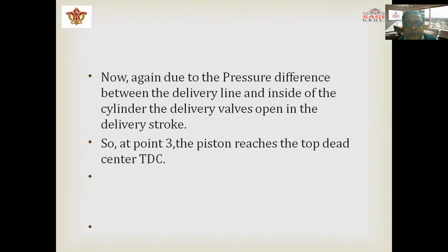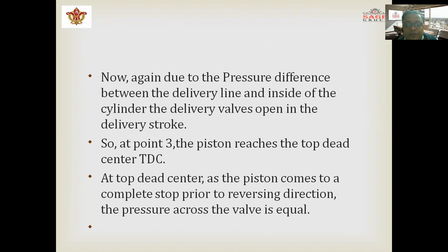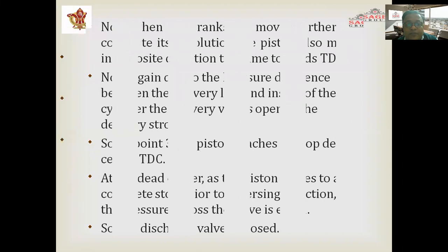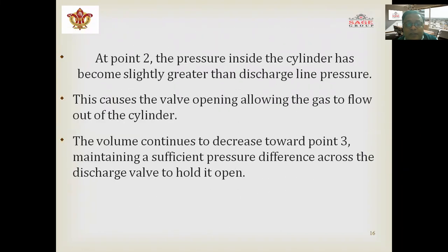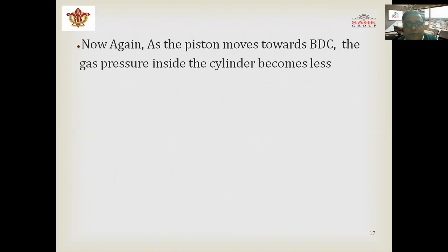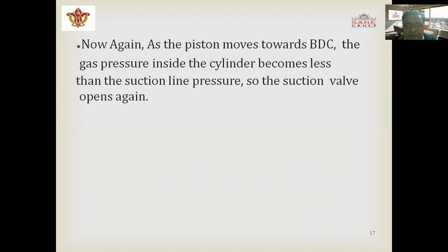Due to the pressure difference between the delivery line and inside the cylinder, the delivery valve opens. At point three, the piston reaches top dead center (TDC) and comes to a complete stop prior to reversing direction; the pressure across the valve is equal, so the discharge valve closes. At point two, the pressure inside the cylinder becomes slightly greater than the discharge line pressure, causing the valve to open and gas to flow out. The volume continues to decrease towards point three, maintaining sufficient pressure difference to hold the discharge valve open. As the piston moves back towards BDC, the gas pressure inside becomes less than suction line pressure, so the suction valve opens again, and the cycle repeats.